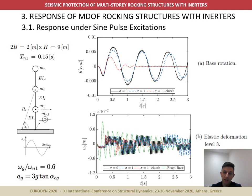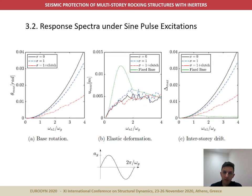The introduction of the clutch significantly improves the efficiency of the inertor in reducing the rotation response, although it does not translate into a significant alteration of the amplitude of the structural deformations. Similar conclusions can be obtained from the rocking spectra presented in the figures, which show the peak rotations, displacements, and drifts for a wider range of frequency ratios. Although the improvements in the rotation response happen at the expense of inducing slightly larger elastic deformations, this drawback does not translate into higher drifts since the total lateral deformation is mainly controlled by the base rotation. The clutch significantly improves the performance of the inertor device.